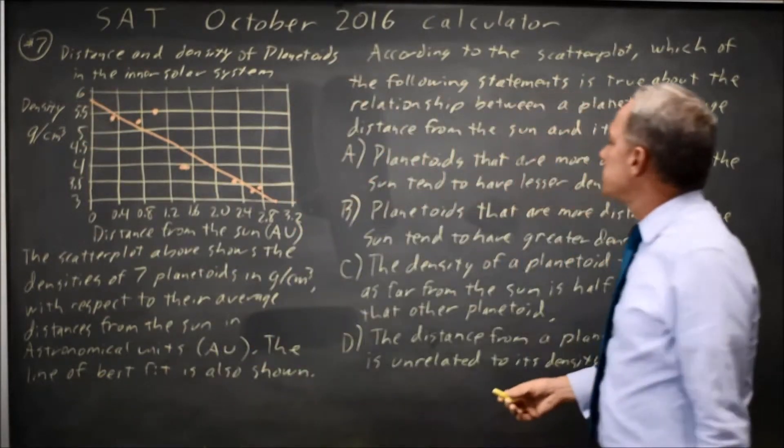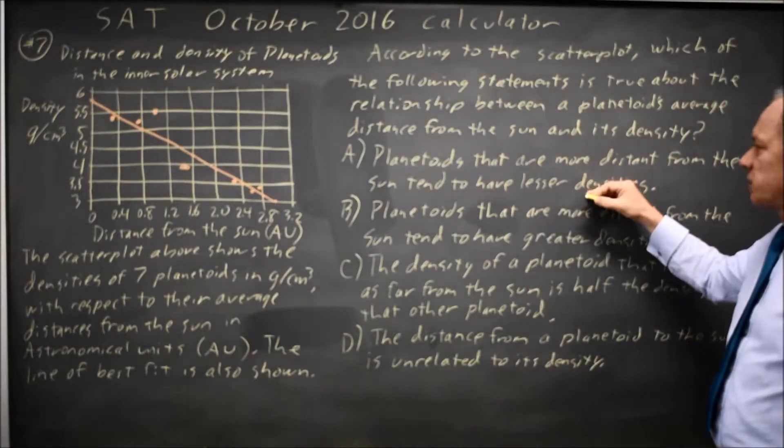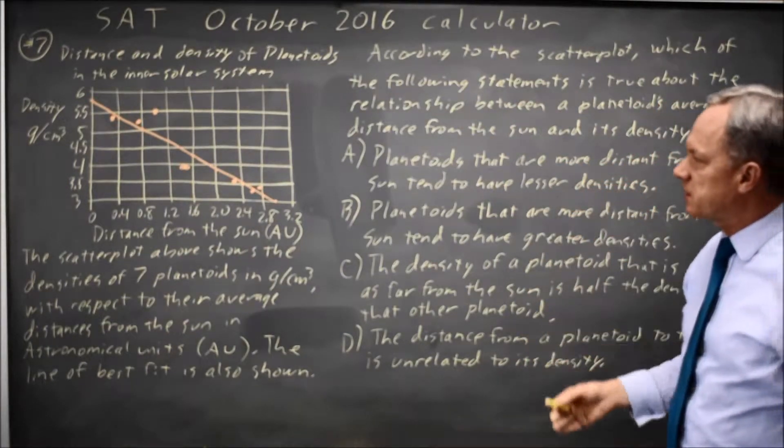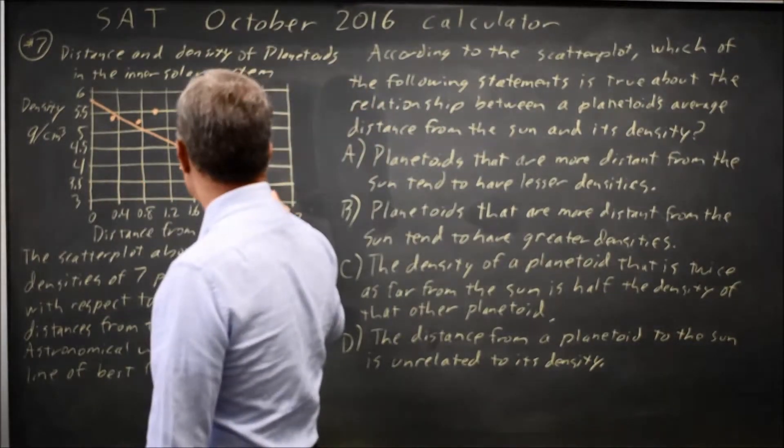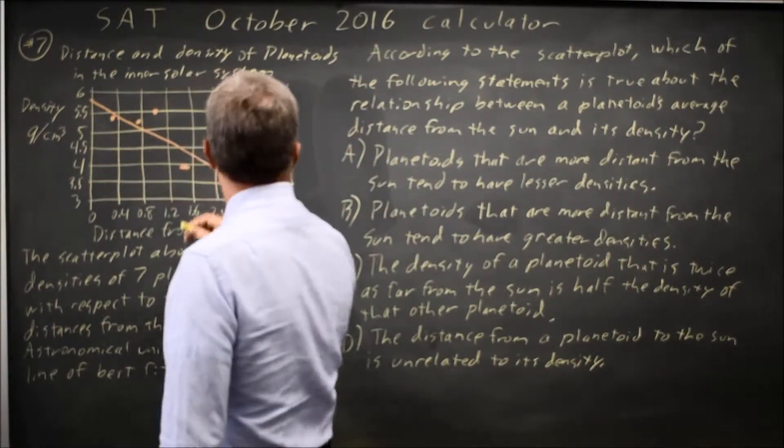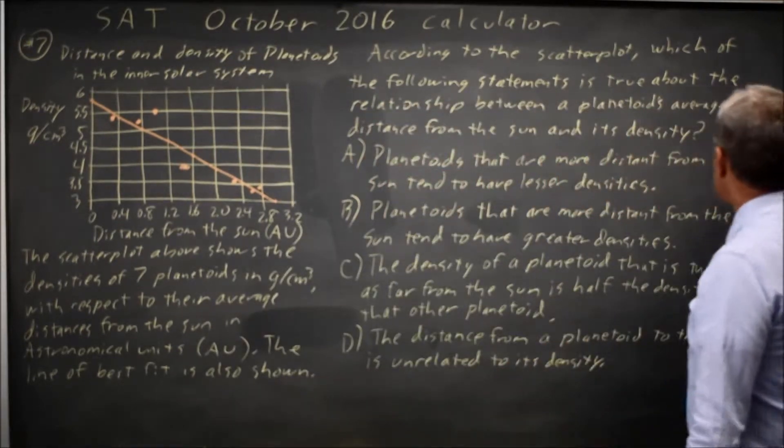Choice A is planetoids that are more distant from the sun tend to have lesser densities. As we go more distant from the sun, the density values are going down, so that looks correct.